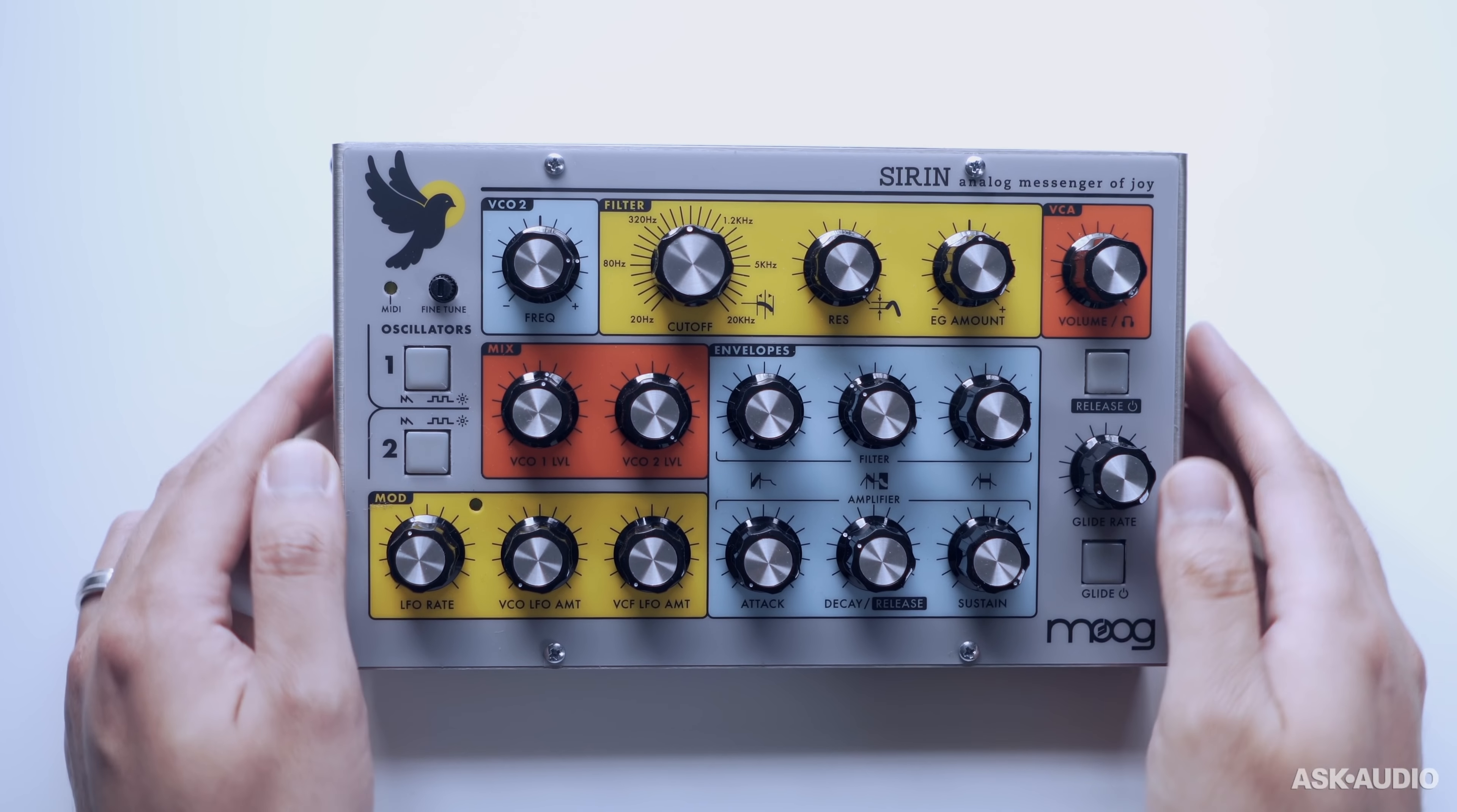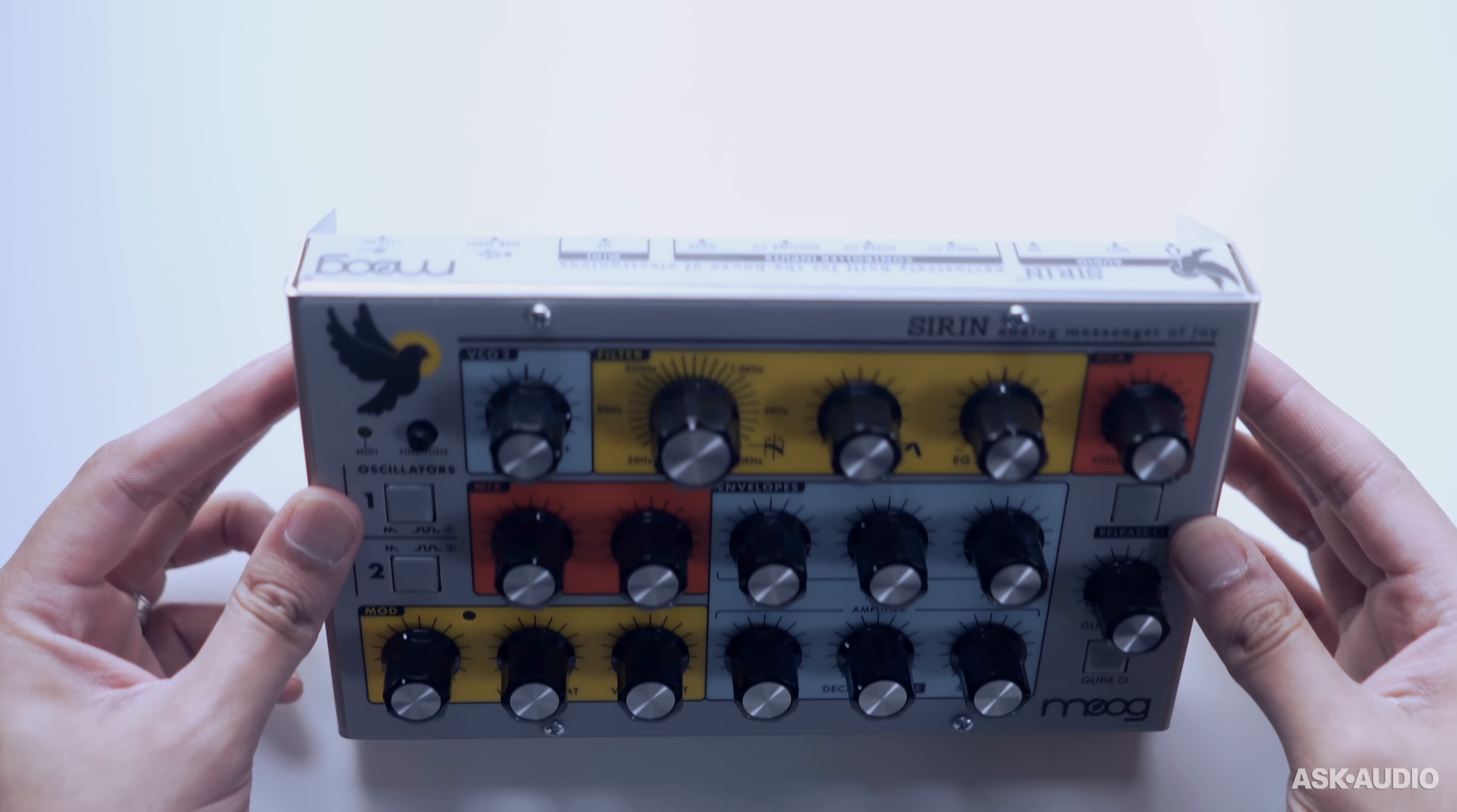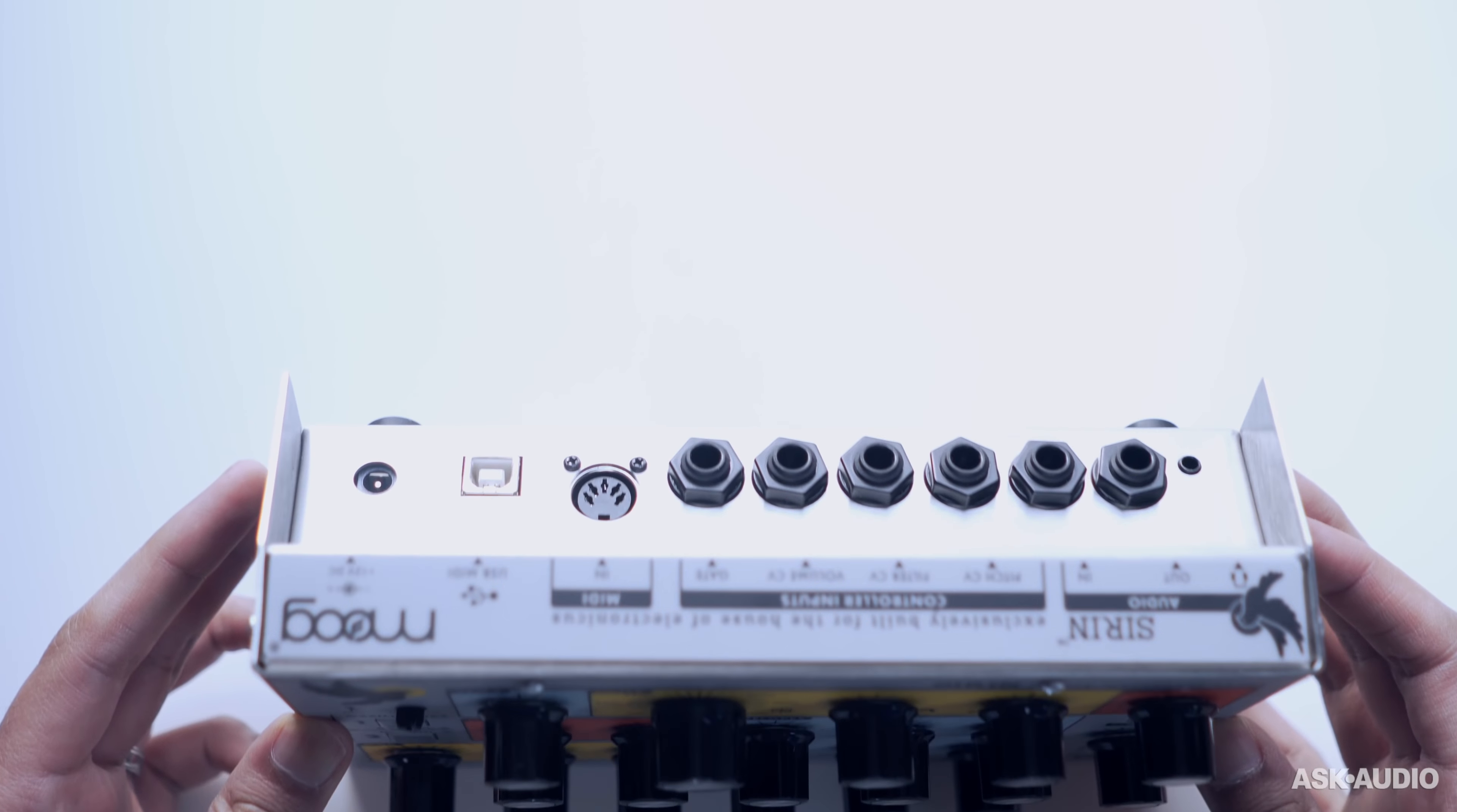Alright, so now that we've got it out of the packaging, let's have a look at this synth. An all-metal design here, very solid, very sturdy, very similar to most Moog products. It's just missing those wooden side cheeks. They do sell those side cheek kits for the Minotaur and I'm sure it'll work on the siren. Let's take a look at the connectivity here at the back.